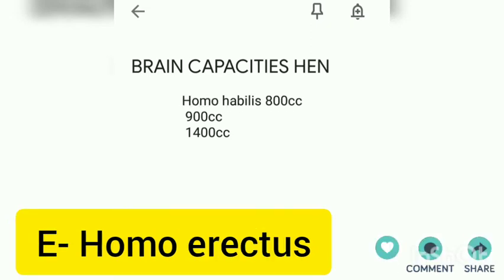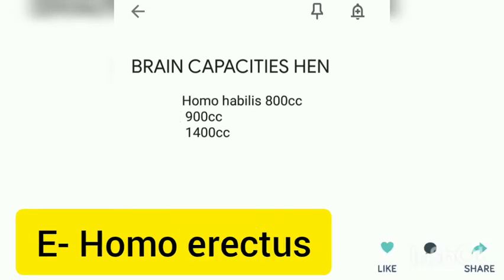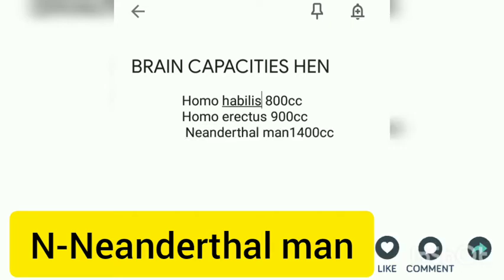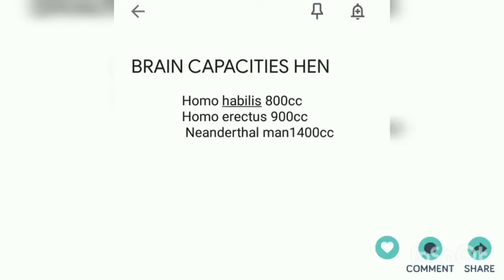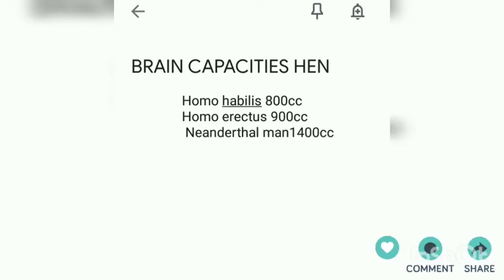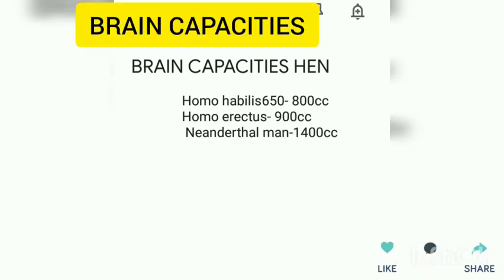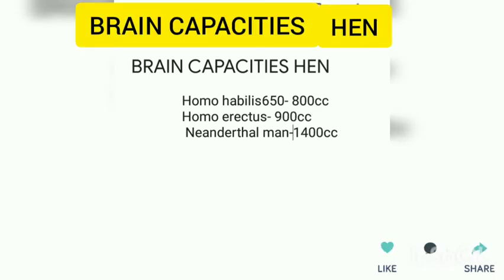In the mnemonic H-E-N: H is Homo habilis, E is Homo erectus, and N is Neanderthal man. In front of 800, you can also write 650 because the brain capacity of Homo habilis varies from 650 to 800 CC.